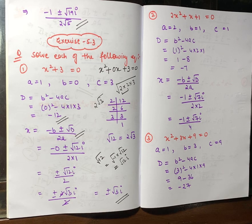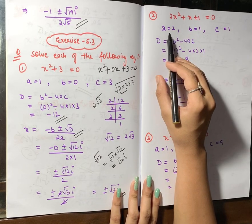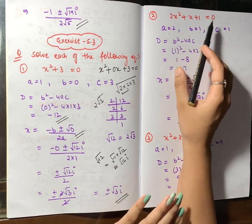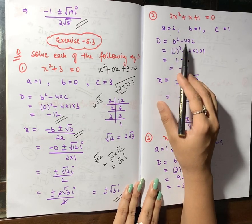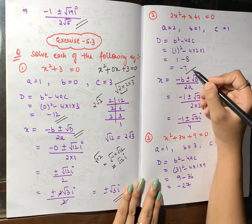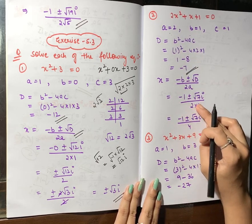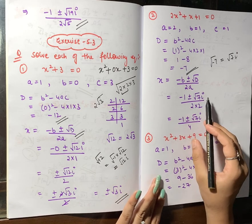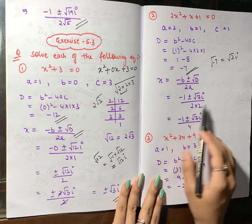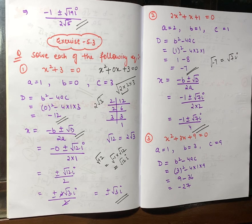Question 2: 2x² + x + 1 = 0. a = 2, b = 1, c = 1. D = b² − 4ac = 1 − 4(2)(1) = 1 − 8 = −7. So x = (−1 ± √(−7)) / (2·2). Writing √(−7) = i√7, the required answer is x = (−1 ± i√7) / 4.